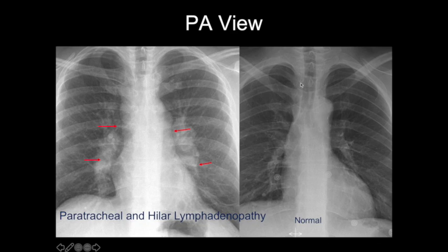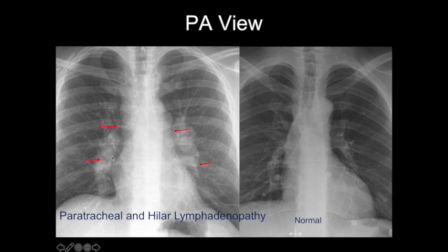Our paratracheal regions — the right paratracheal stripe should be thin, but it's very thick here. There's a lobulated contour to both sides of the mediastinum, which is not normal. Look at normal hila: sometimes the vessels can look more prominent and that's okay, but they're still very linear and vessel-like. These are clearly very lobulated and rounded — these are abnormal hila.